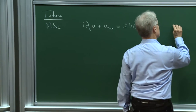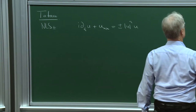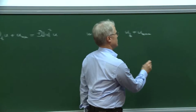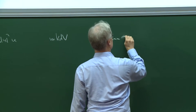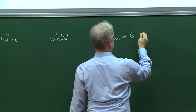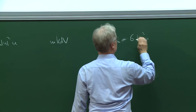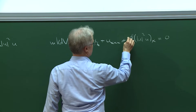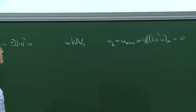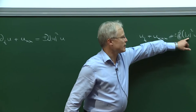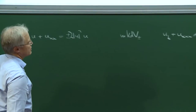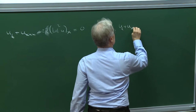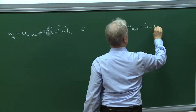Then there is the modified KdV equation, which is u_t + u_xxx plus or minus 6|u|² u_x equals 0. I want to write it with the absolute value here in order to allow complex solutions — then it's a complex MKdV, otherwise it's the real one. And then there's a KdV equation, which is u_t + u_xxx minus 6u u_x equals 0.